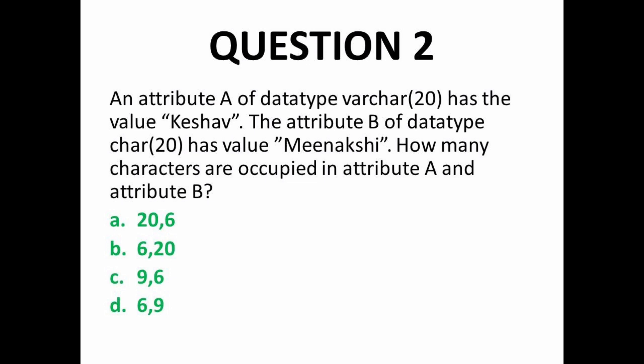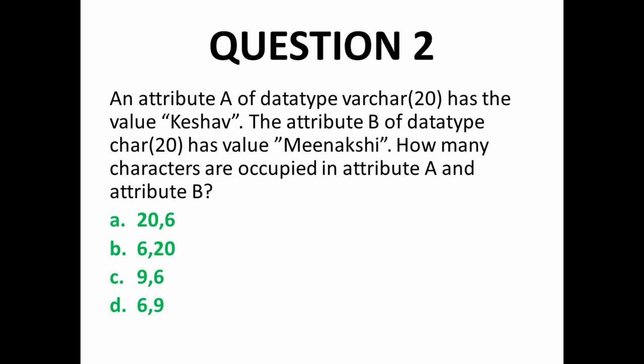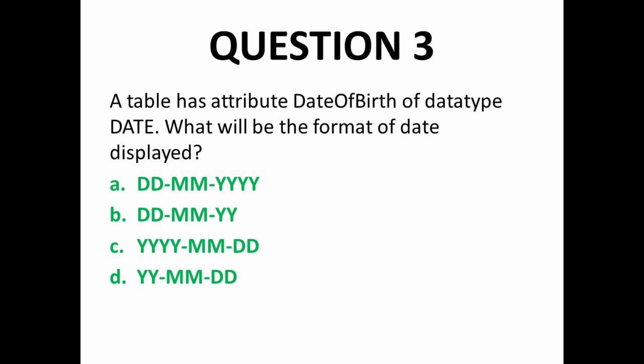Attribute A has data type VARCHAR(20) — VARCHAR means variable length, so it will only store the amount of memory actually needed. Attribute B has data type CHAR(20) — fixed length, so 20 characters of memory are always occupied regardless of the value stored. So for the value 'Keshav' (6 characters) in attribute A and fixed-length 20 in attribute B, the answer is 6 and 20 — option B is correct.